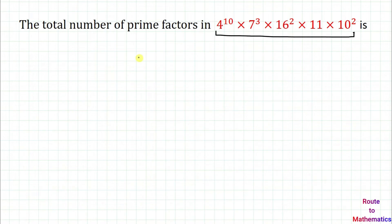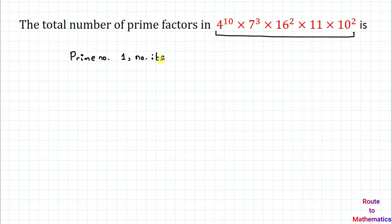What do we mean by a prime number? Prime numbers are the numbers which have only two multiples — that is, 1 and the number itself. For example, prime numbers are 2, 3,